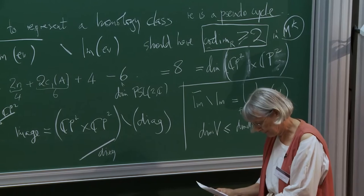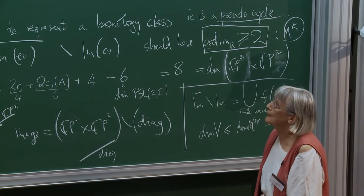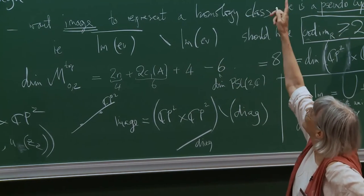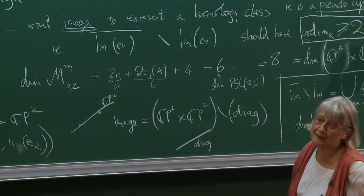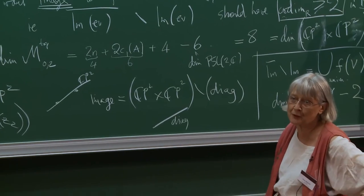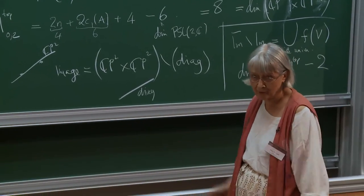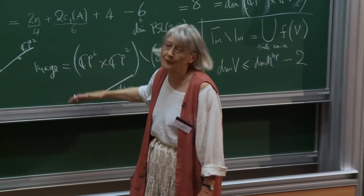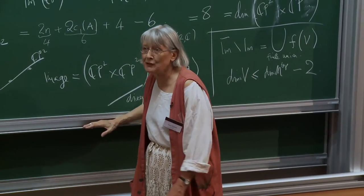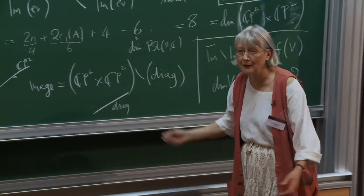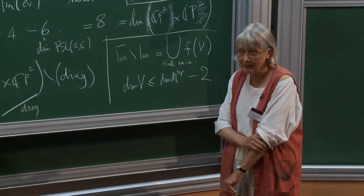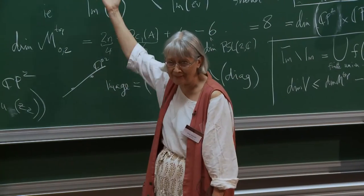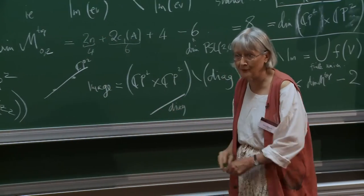Now, the regularity problem is arranging that the space is transversally cut out — finding a J to make it a nice manifold. There's also the compactness problem: ensuring the image is compact enough. The compactness is actually much easier to deal with than regularity. So let me say a few words about compactness — specifically Gromov's compactness theorem.